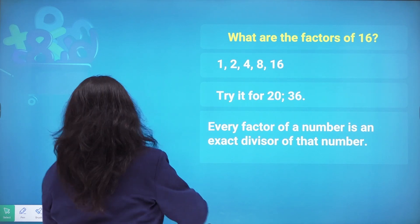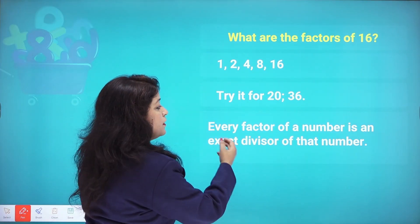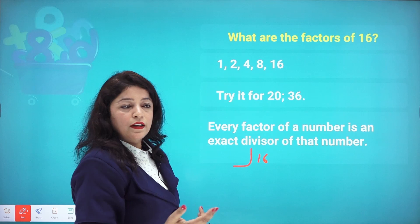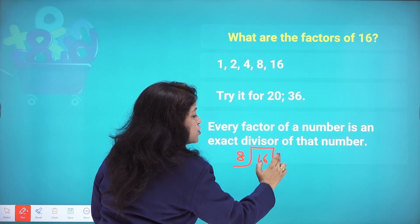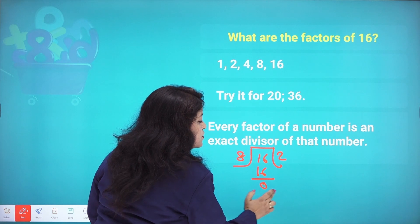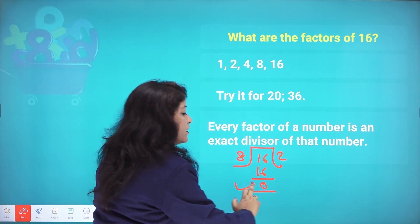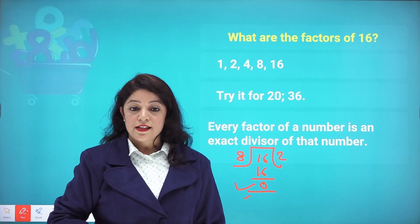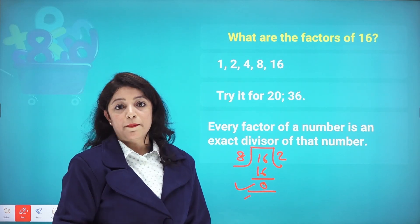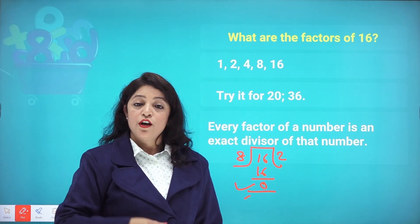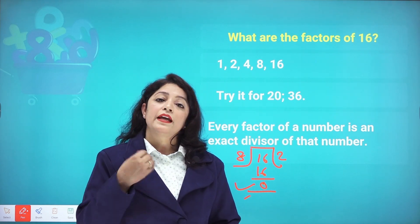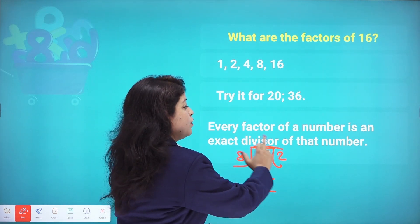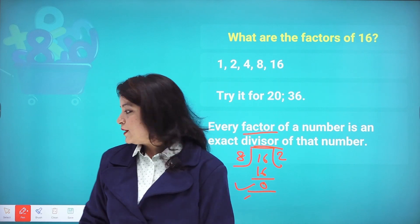If I take the number 16 and divide it by one of its factors — say 8 — I get a remainder of 0. This shows that when a remainder is 0, the divisor is a factor of that number. So every factor of a number is an exact divisor of that number. If you divide any number by something and get remainder 0, that divisor is a factor.